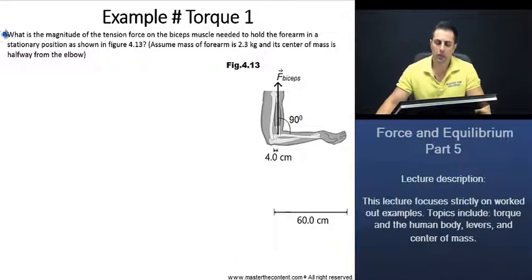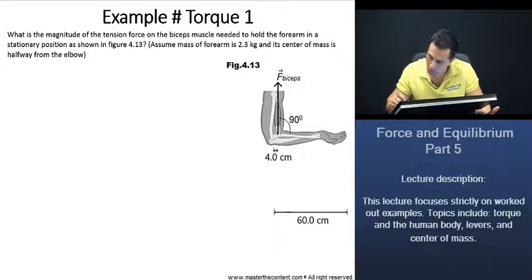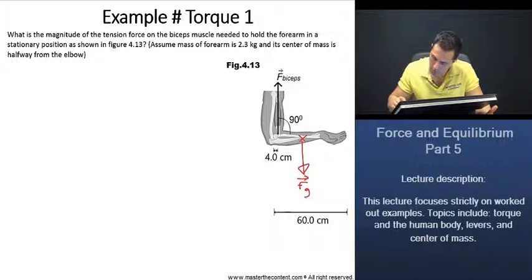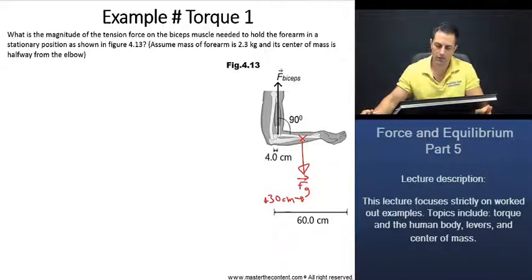So we are given the mass of the forearm, which is 2.3 kilograms, but we also know that there's also going to be a force that's pulling the weight of the forearm that's going to be pulling the arm down. And the center of mass, it's telling us, is halfway from the elbow. So if the elbow here is 60 centimeters, it's going to be 30 centimeters. We'll just designate that right about there. So that there's going to be the force of gravity on the forearm, 30 centimeters from the elbow.